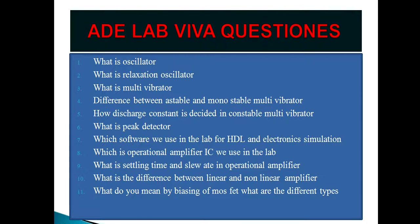How is the discharge constant decided in a multivibrator? The discharge constant is normally decided by the R and C factor. What is a peak detector? A peak detector is a circuit which detects the peak in a waveform — it can detect either positive peaks or negative peaks in the waveform.